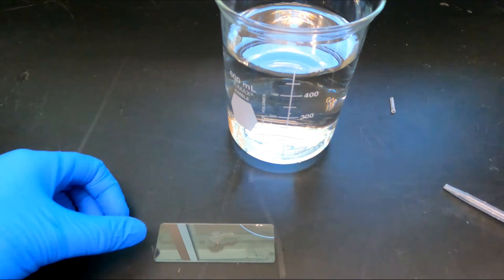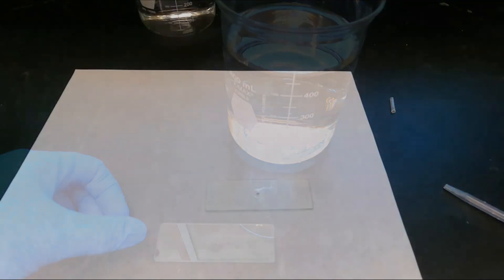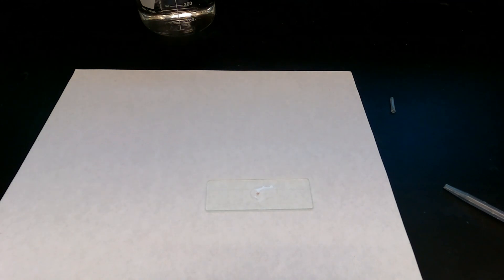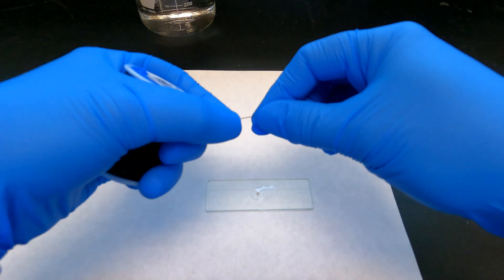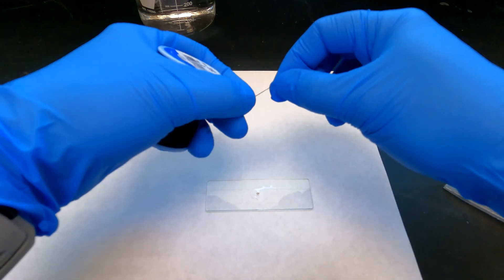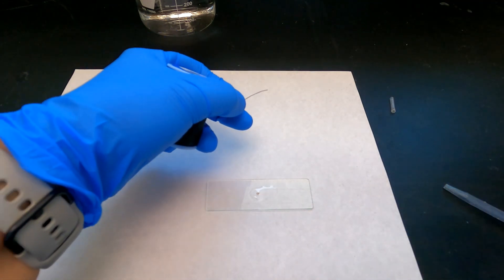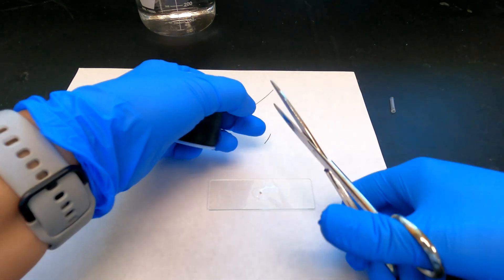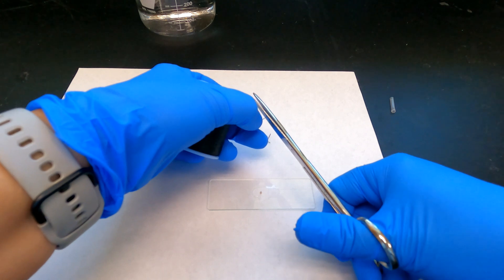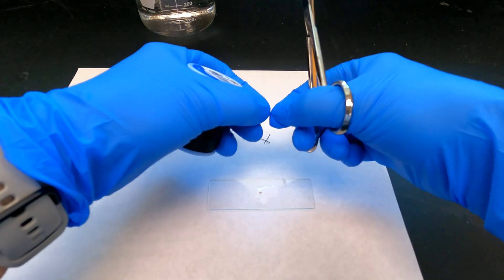If you find that your Daphnia is moving too much, making it difficult to see the heart or count the heartbeats under the microscope, you can use sewing thread to corral the Daphnia on the slide. To do this, cut three short segments of sewing thread, each no longer than one centimeter in length. Once you have the thread cut, arrange the pieces in a triangle around the Daphnia.